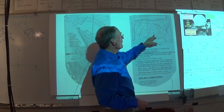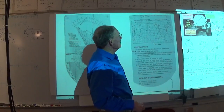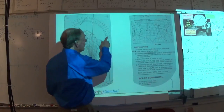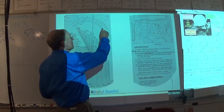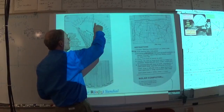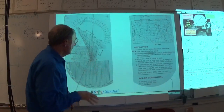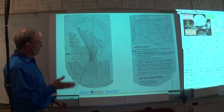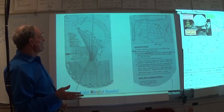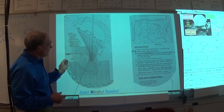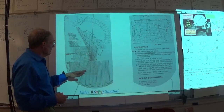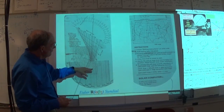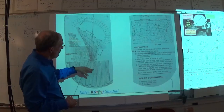Depending on where you are in latitude and time of year, you have a few minute corrections for every one of the readings to get actual solar time converted to civil time. Then you can figure out when the Sun's going to set, when the twilights are going to occur — civil, nautical, and astronomical twilights.